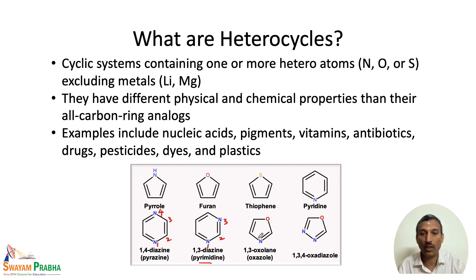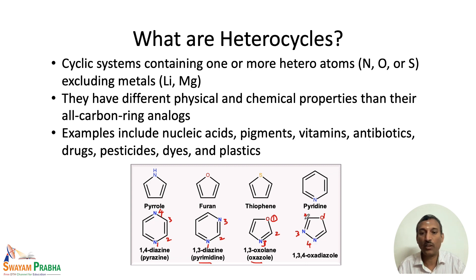Instead of the same heteroatom, we can also have different heteroatoms. In this particular case the numbering starts from oxygen as number 1, then 2 and 3, giving 1,2,3 — this is 1,3-oxazole, with the common name oxazole. We also have 1,3,4-oxadiazole. In the nomenclature section we will study how compounds are numbered elaborately in the later part of this session.